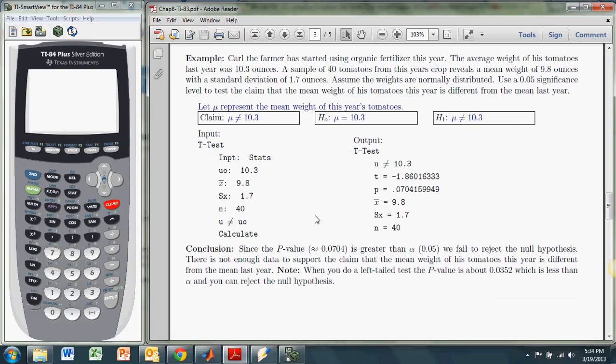So we have Carl the farmer started using some new fertilizer this year. And he wants to know if the weights of his tomatoes is different this year than it was last year before using this fertilizer. So he knows the average from last year. The average weight from last year was 10.3 ounces. So he wants to see how he's doing this year.